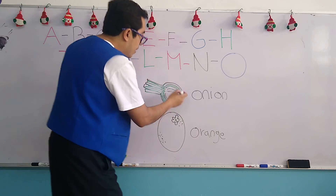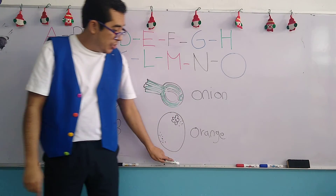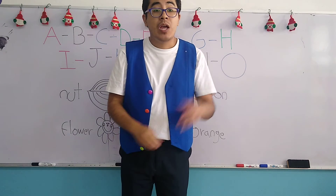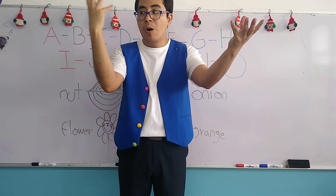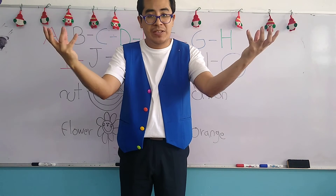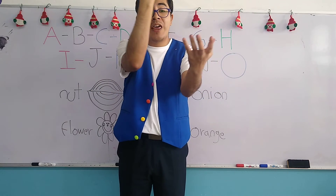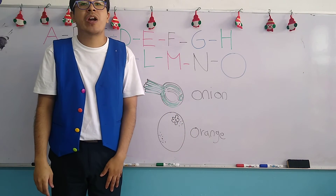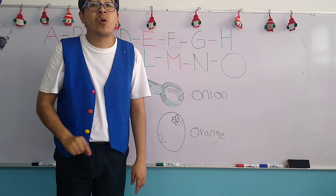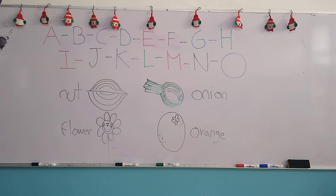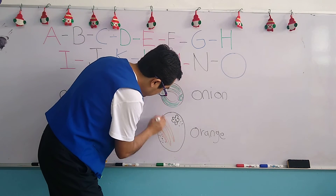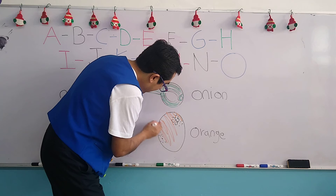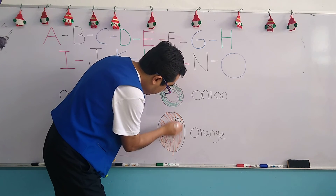Let's continue with the final object, which is the orange. O — orange. Is it the same? Yes! The word orange begins with the letter O, so we are going to paint it. Let me grab the color orange. Here I have my color orange and I am going to paint the object. Remember, the orange is a fruit and its color is also orange — so we paint it.